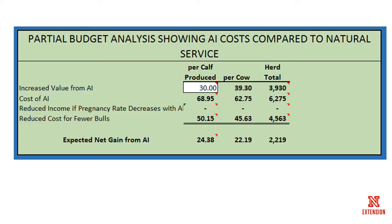In this example I used a value of $30 for increased value from AI calves. Also remember we said we would get 1% greater calf crop weaned per cow exposed, which is also taken into account. So we have the cost of AI, reduced income if we had an expected pregnancy rate decrease with AI — in this case we said it would be better than natural service so there is no reduction — and reduced cost for fewer bulls. The expected net gain from AI is around $24 per calf produced, $22 per cow, and over the total herd we would expect to net an additional $2,200 in this example utilizing AI with a cleanup bull versus just natural service.